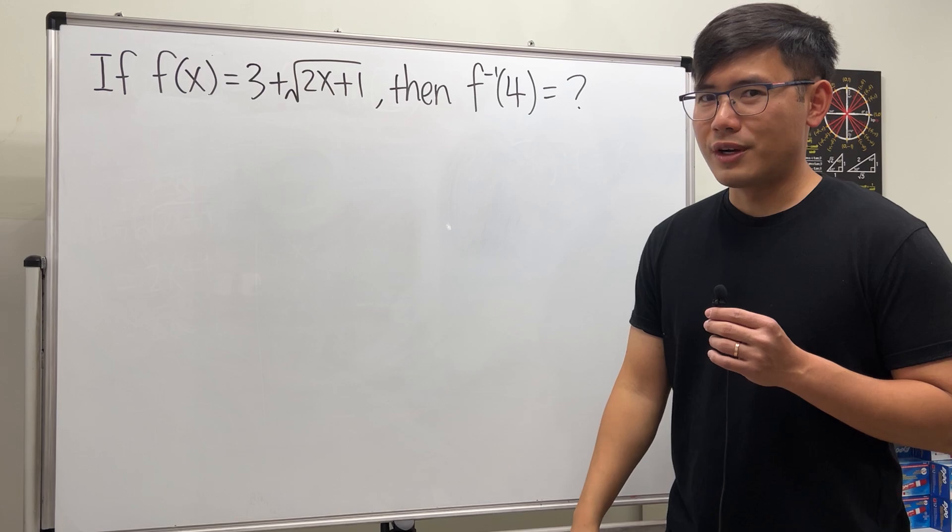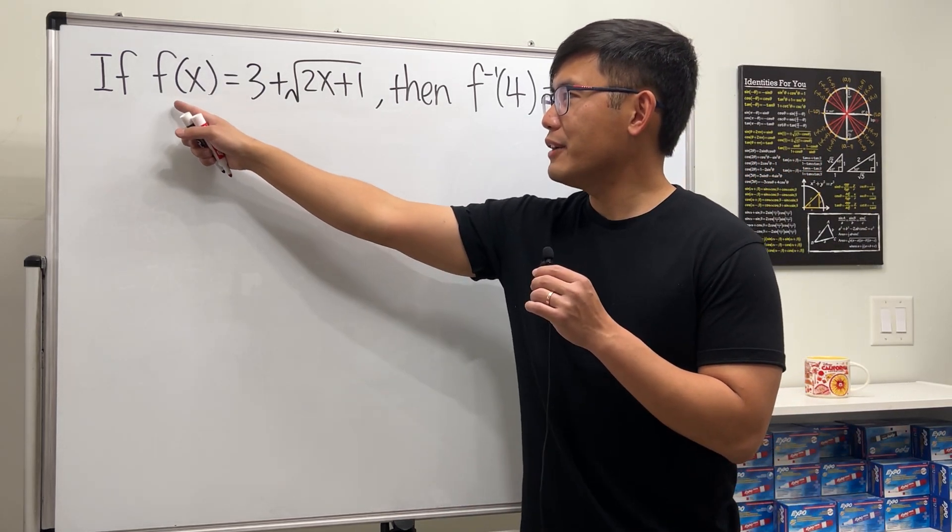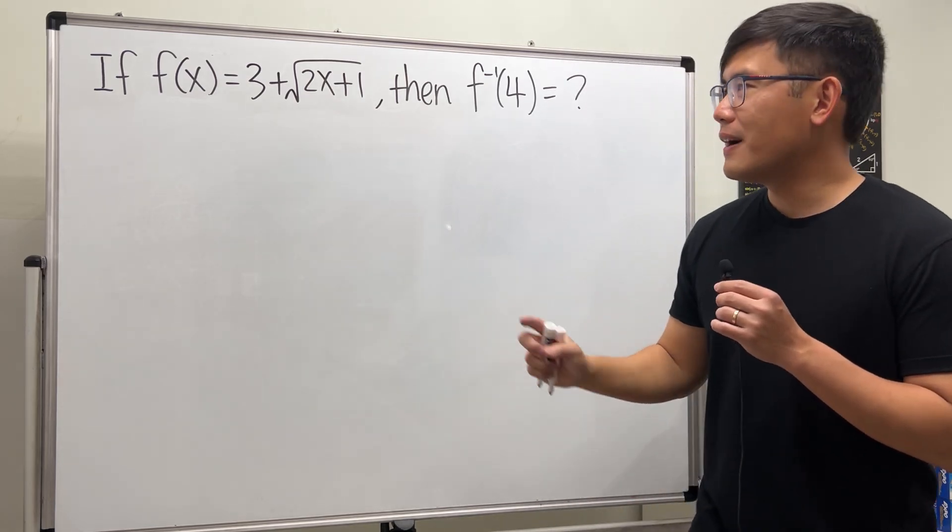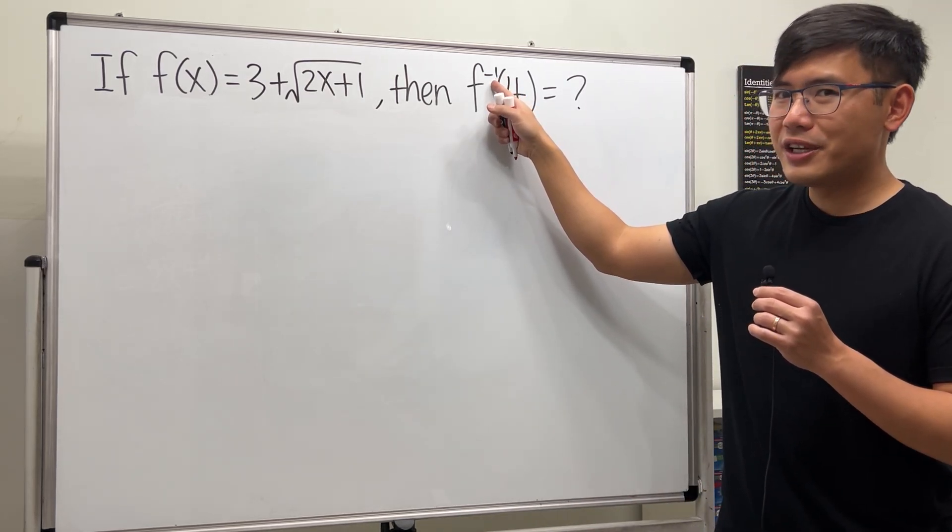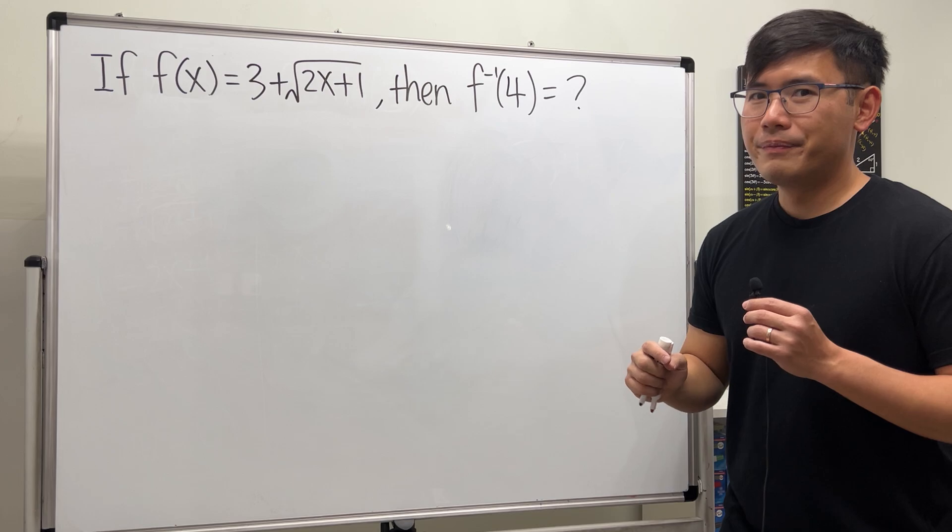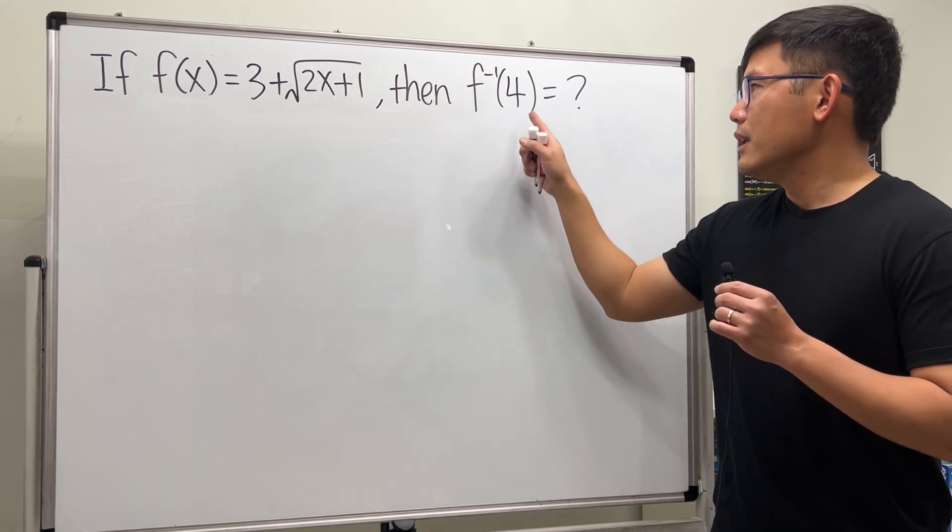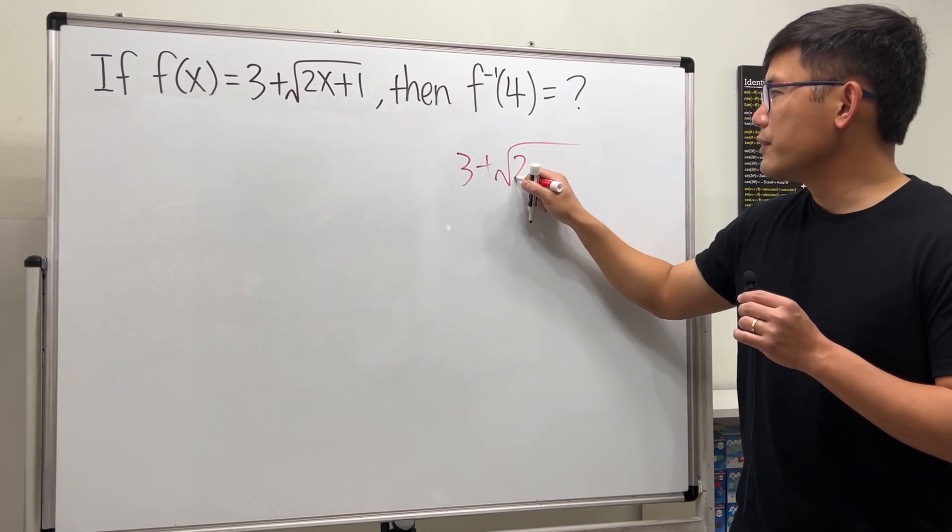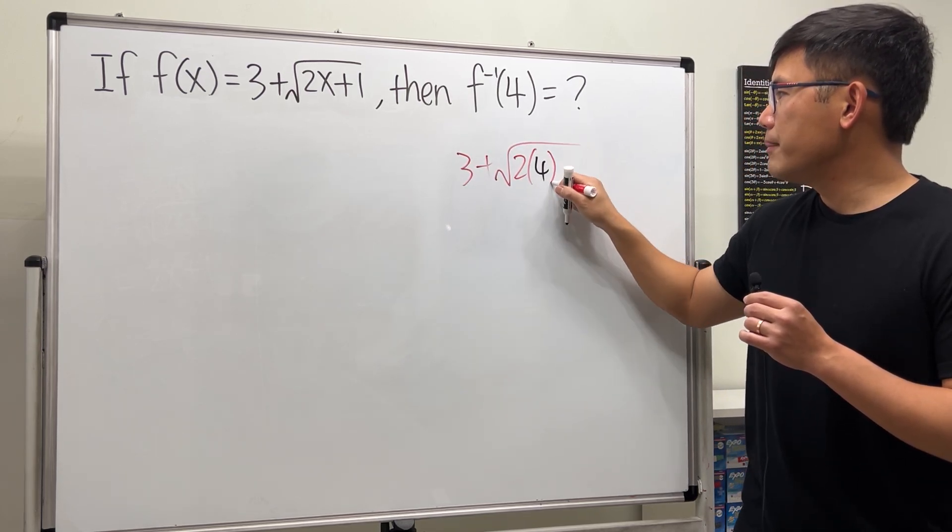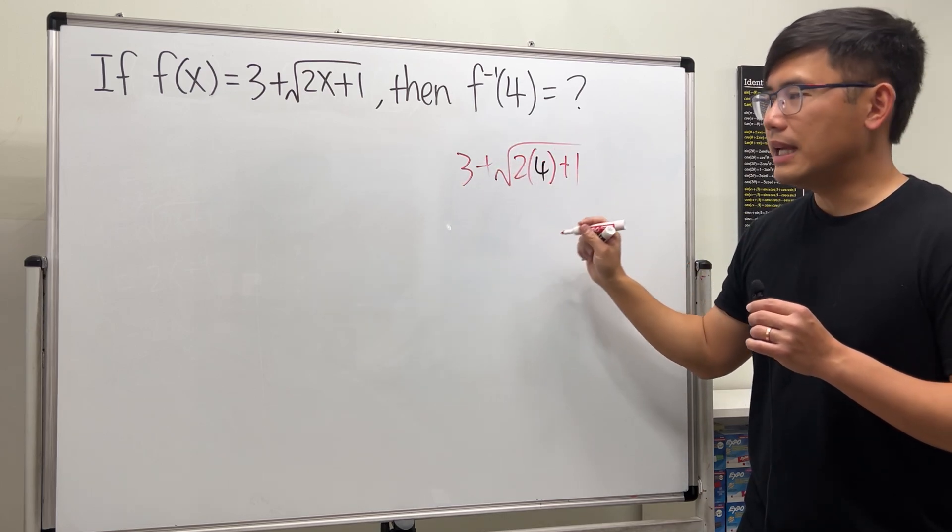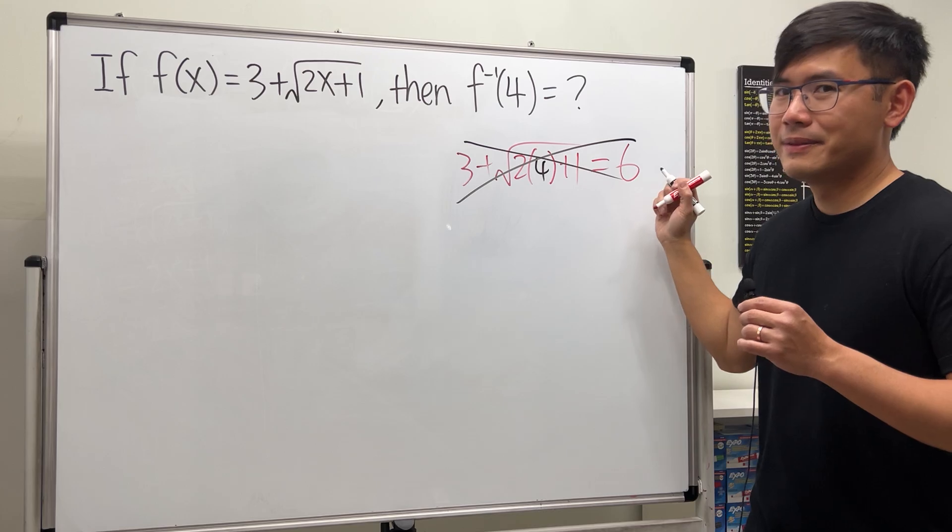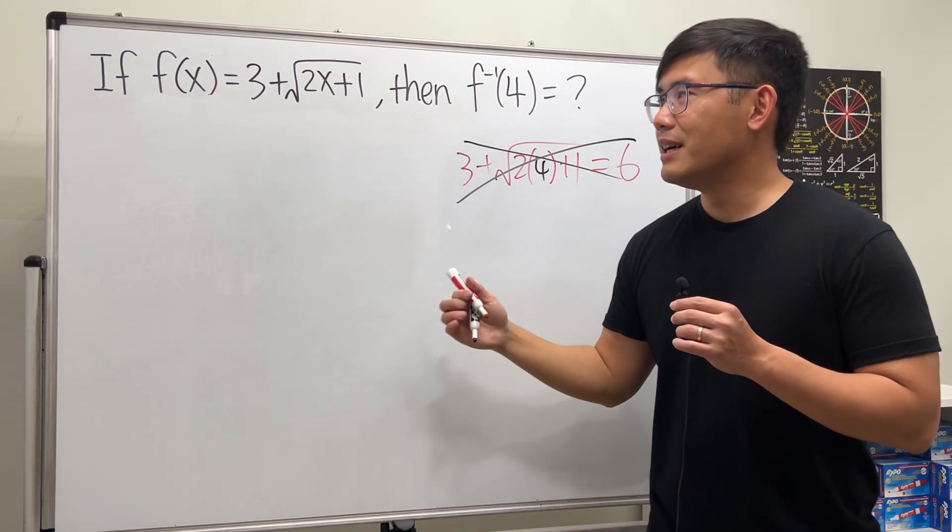Okay, don't get this kind of question wrong on the test. Here we have the function f(x) equal to 3 plus the square root of 2x plus 1, and we're going to find f with this notation, and inside here we have 4. First common mistake: if you put a 4 inside this x and say we get 3 plus the square root of 2 times 4 and then plus 1, and if you work this out you get 6, but no this is not correct. You don't even get partial credit for this because these are two different things. This right here is the inverse of f.